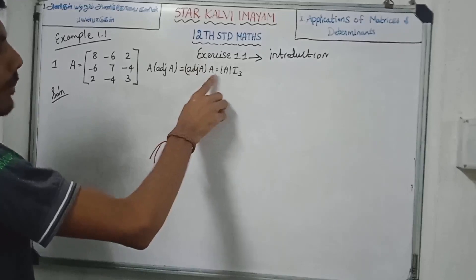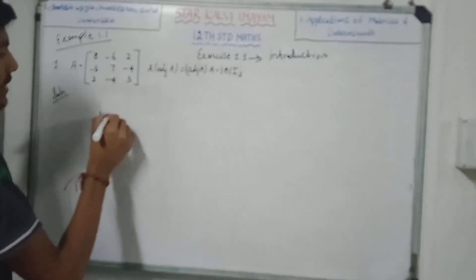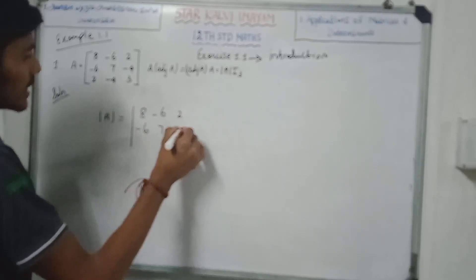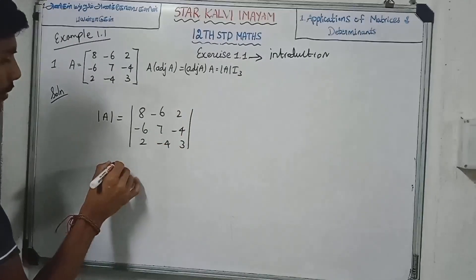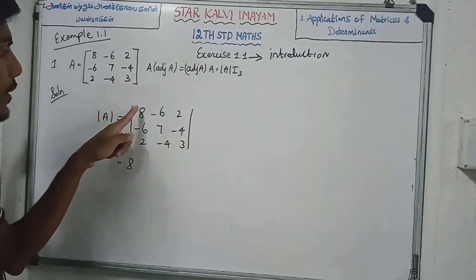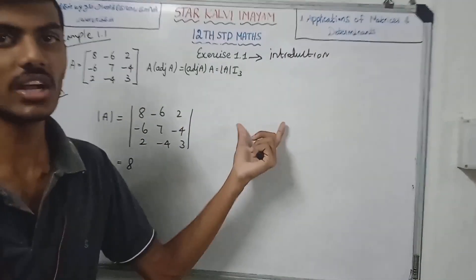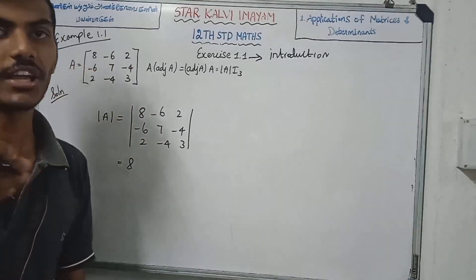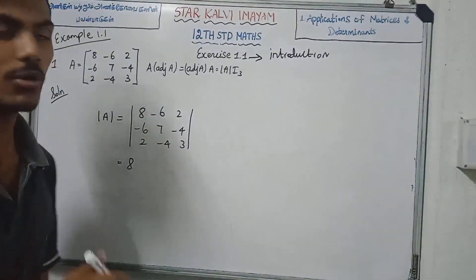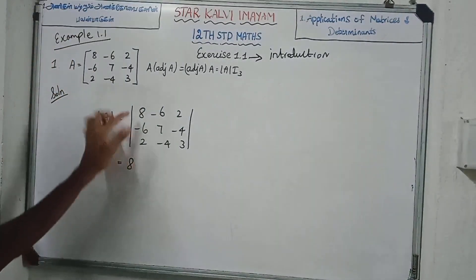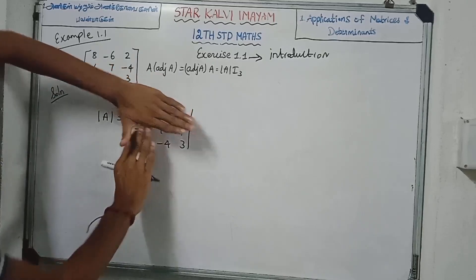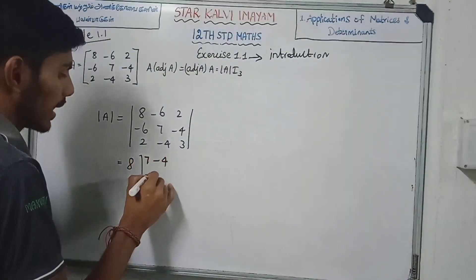Adjoint A multiply. A times Adjoint A. Adjoint A. Adjoint A. Next, the sign pattern for the cofactor matrix.